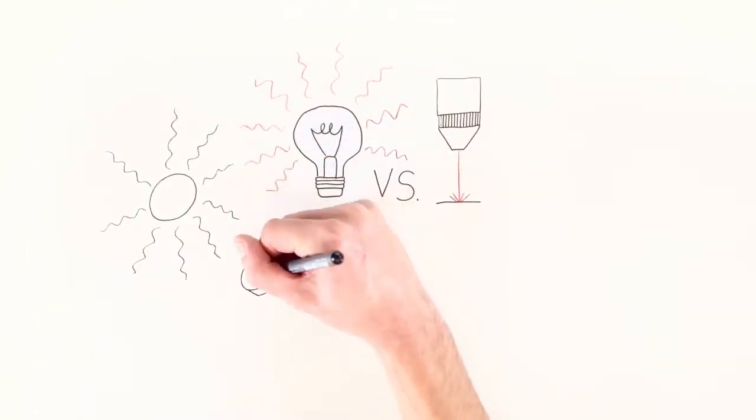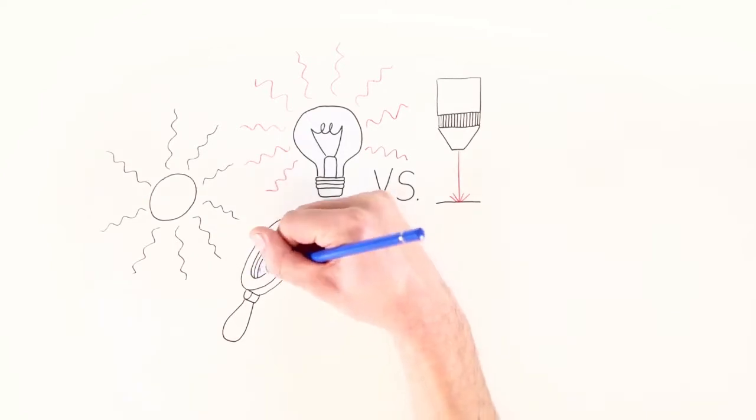The light bulb radiates in all directions, whereas the beam of the laser is directed.